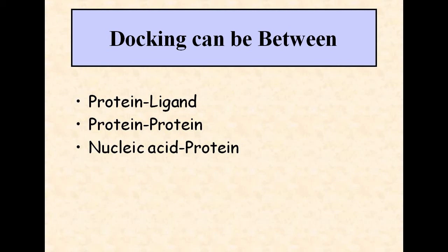The second type is protein-protein docking, which is important because biological activities depend on the specific recognition of proteins. To understand protein interaction networks in a cell, we can perform protein-protein docking and also predict the complex structures of individual proteins.